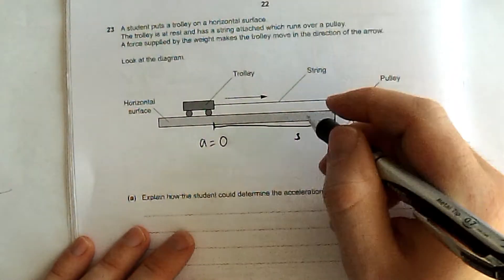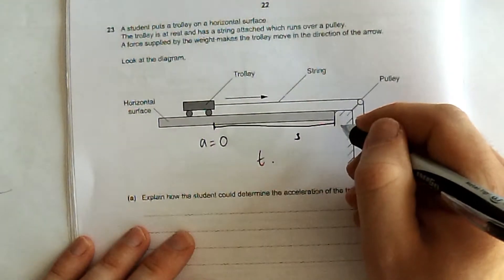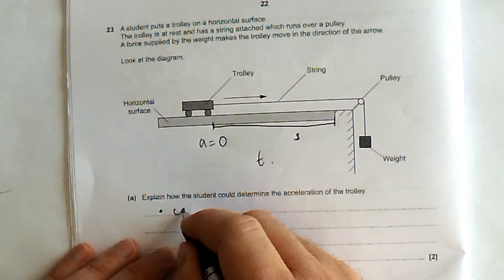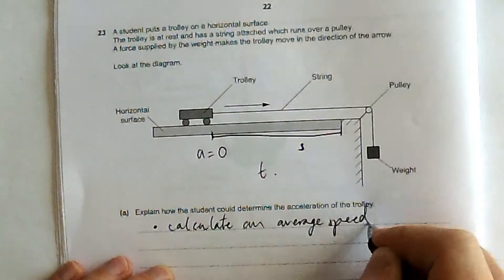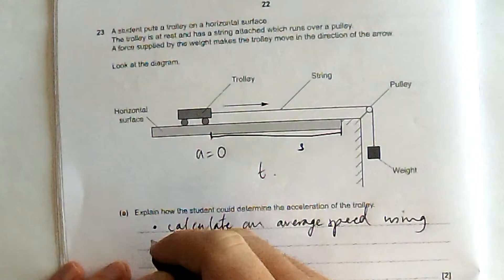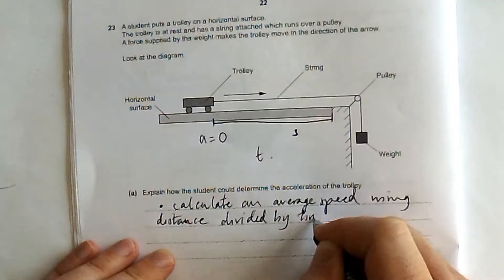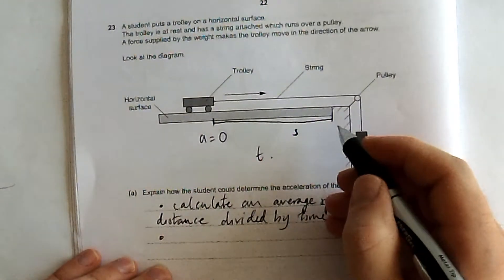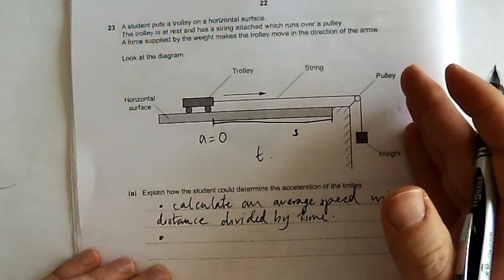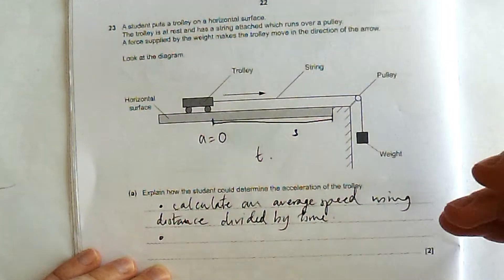And I would measure a time to do that distance. Then I would calculate an average speed using distance divided by time. I double it to give me a final speed, so I presume it accelerated just the same way throughout the whole thing.